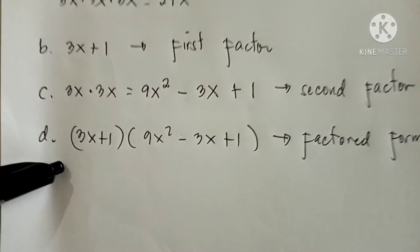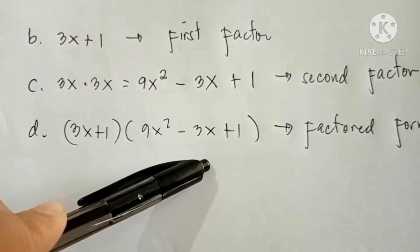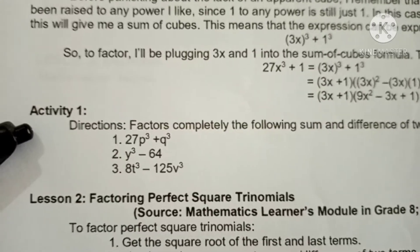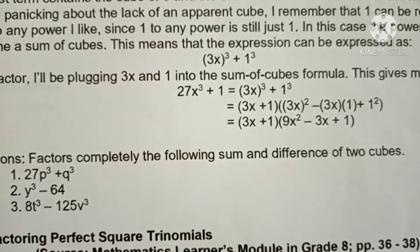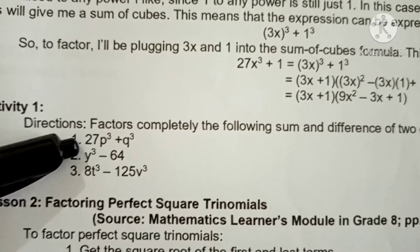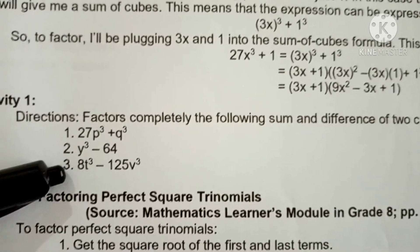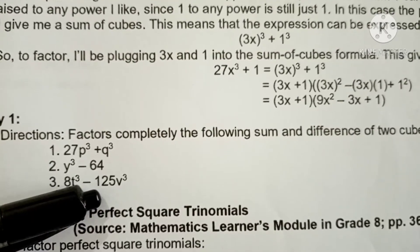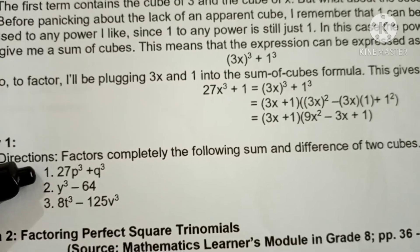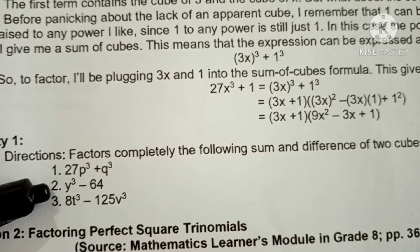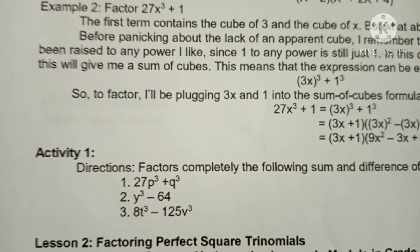So that is the answer — simply write the first factor and the second factor. For Activity 1, directions: factor completely the sum and difference of two cubes. Number 1: 27p cubed plus q cubed. Number 2: y cubed minus 64. Number 3: 8t cubed minus 125v cubed. Number 1 is the sum of two cubes, number 2 is the difference of two cubes, and number 3 is the difference of two cubes. You may start answering.